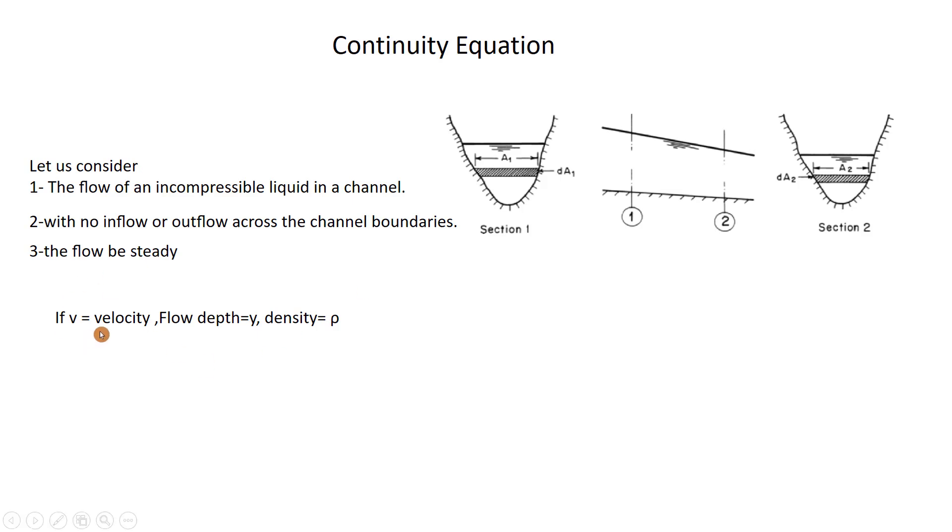If V is velocity, flow depth is y, density equals ρ, top water surface width is B, and the flow area is represented by capital A. The rate of mass inflow through area dA1 at section 1